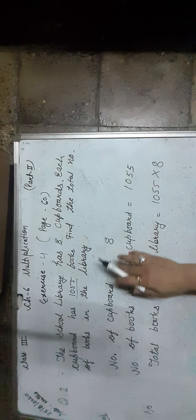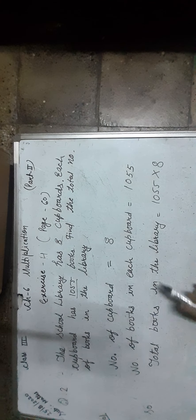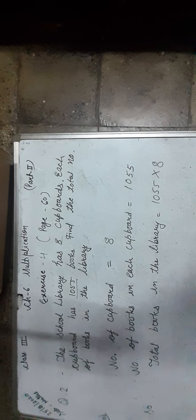Question 2: The school library has 8 cupboards and each cupboard has 1,055 books. Find the total number of books in the library. Total number of cupboards is 8 and number of books in each cupboard is 1,055. So total books in the library is 1,055 × 8. Arranging in vertical columns, the product of 1,055 and 8 is 8,440 books.